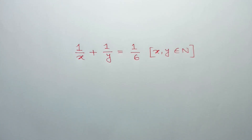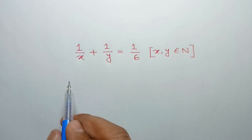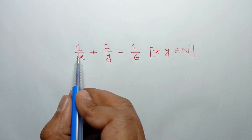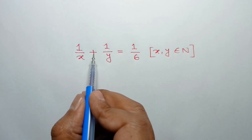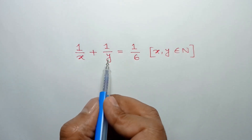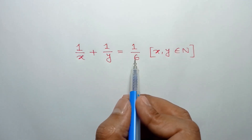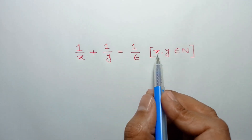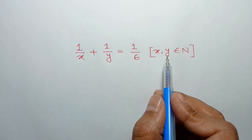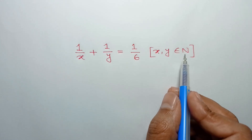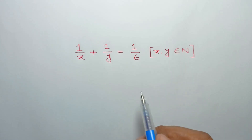Hi, everyone. In this video, I am going to show how to solve 1 over x plus 1 over y is equal to 1 over 6, where x and y are natural numbers.